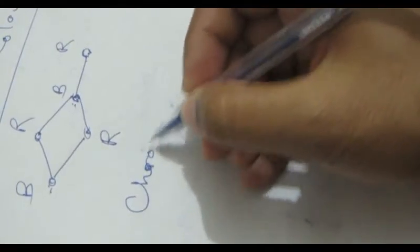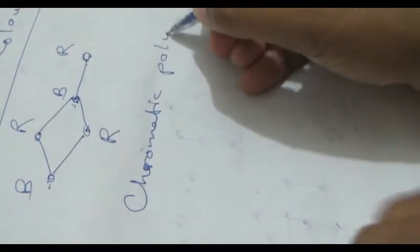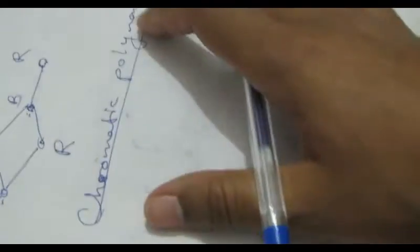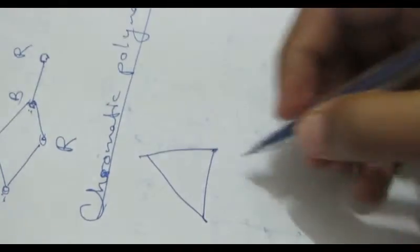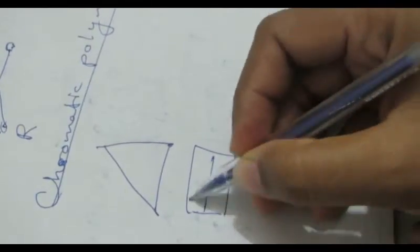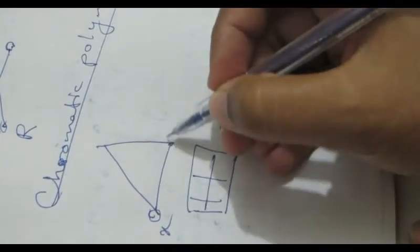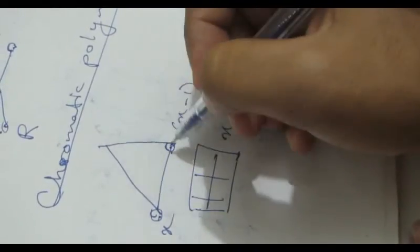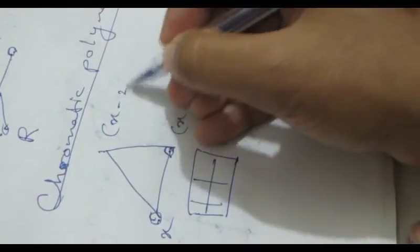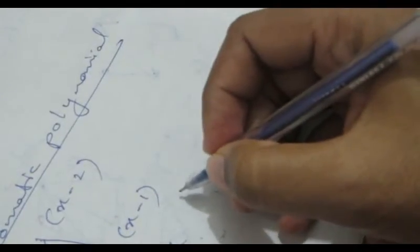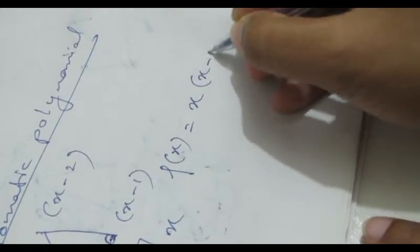Now what is the chromatic polynomial? Think this is a graph and you have x colors in a palette. The first vertex can be colored in x ways, the second vertex in x minus one ways since adjacent vertices cannot share the same color, and the next in x minus two ways. So the chromatic polynomial f(x) equals x times (x minus one) times (x minus two).